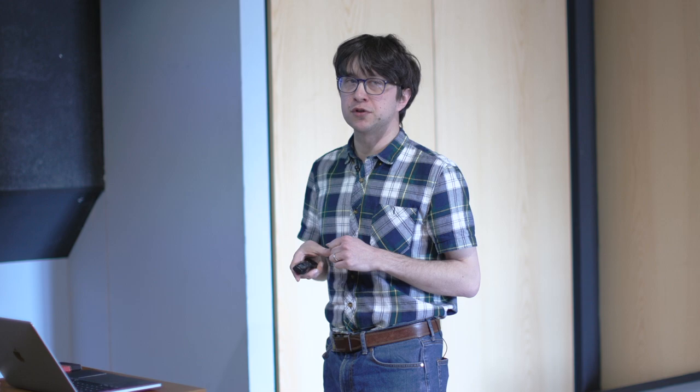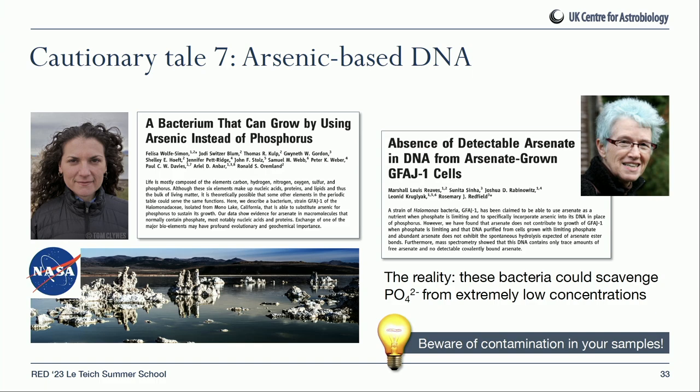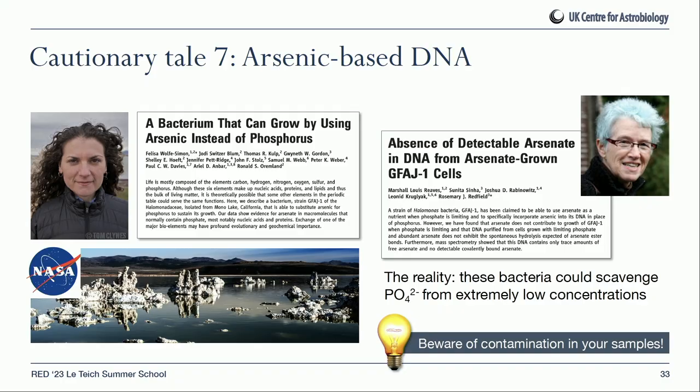There was also a NASA press conference claiming to have found bacteria using arsenic instead of phosphorus in their DNA, isolated from Mono Lake in California. When other scientists tried to replicate this finding, they found these bacteria were very good at growing with very low levels of phosphorus, but were not using arsenic in place of phosphorus. The experiments claiming no phosphorus was present actually had trace phosphorus, which the bacteria were scavenging from very low concentrations. The lesson: beware of contamination in your samples, and beware of the detection limits of your instrumentation.